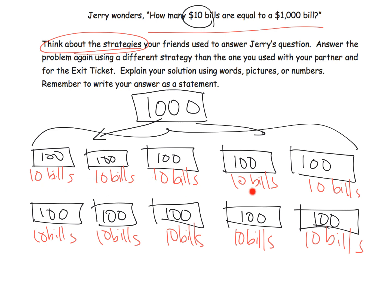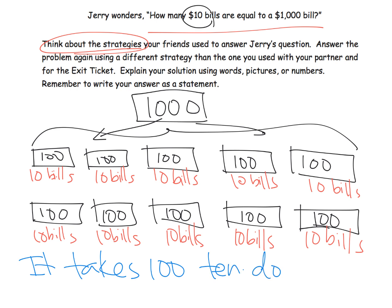So we have 10, 20, 30, 40, 50, 60, 70, 80, 90, 100. So it takes 100 $10 bills to make $1,000.